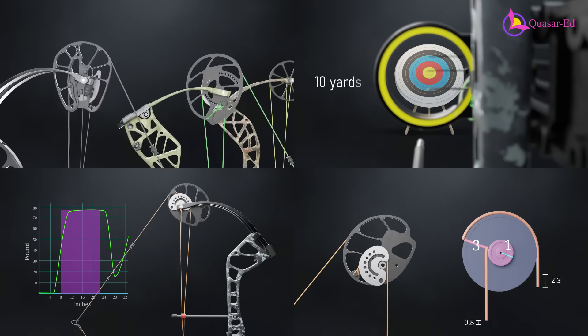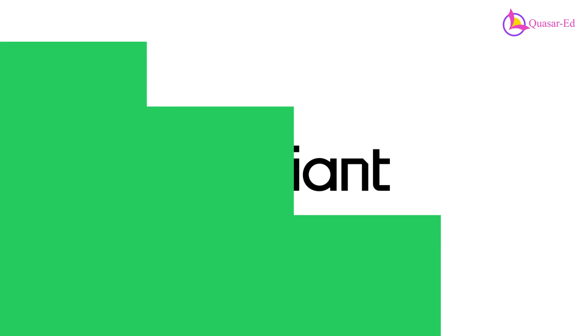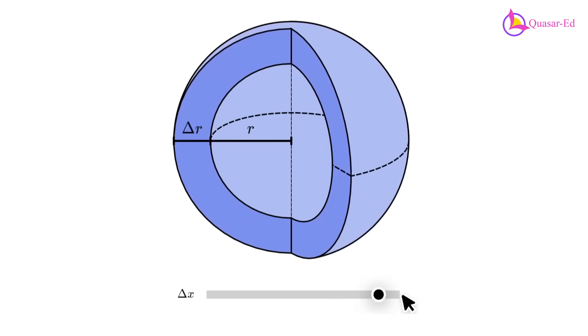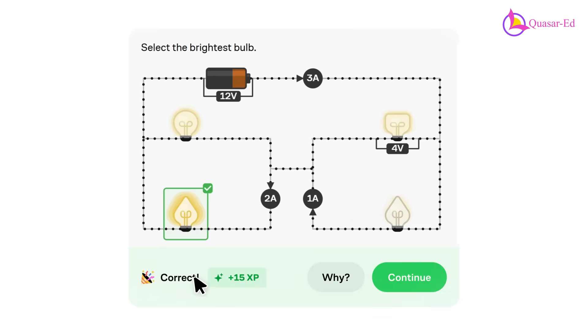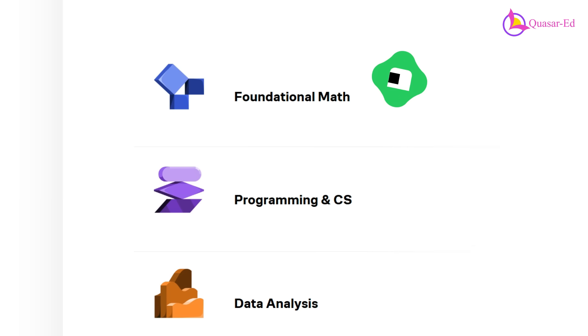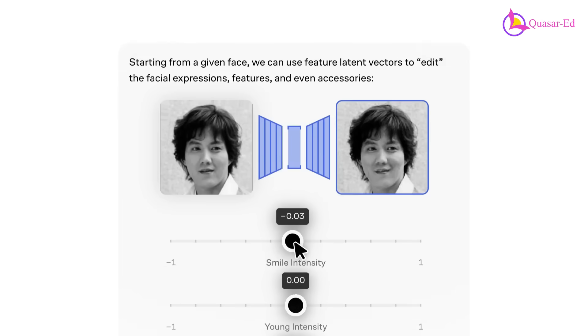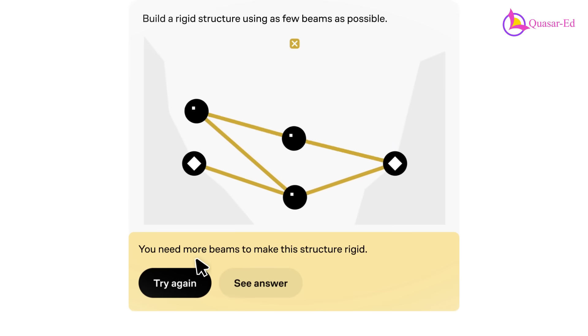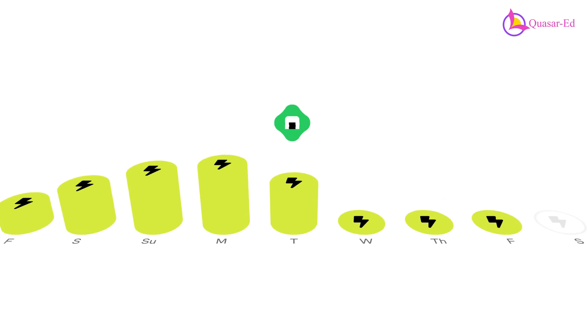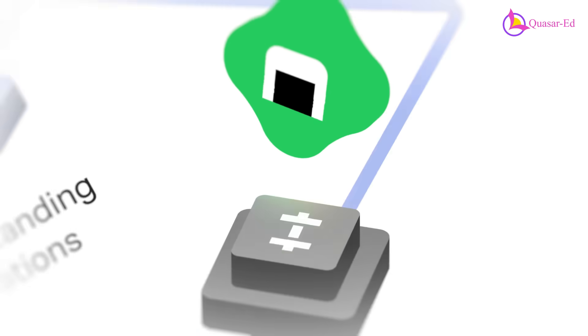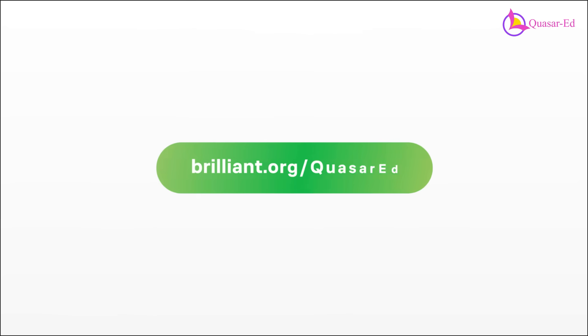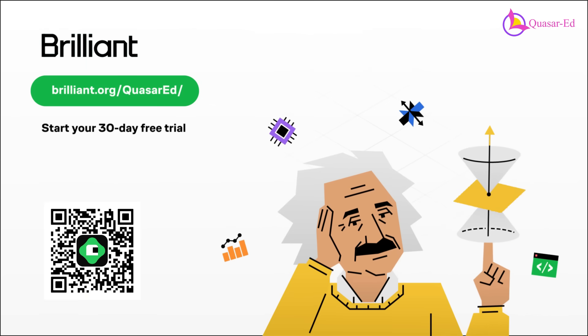And if you enjoy diving into how things like this work, then you'll love today's sponsor, Brilliant. Brilliant is a learning platform that makes tricky topics in math, science, and engineering way easier to understand. Instead of long lectures or heavy textbooks, you get hands-on lessons that are super visual and interactive. They've got courses on everything from simple machines and electricity to black holes and artificial intelligence. To try everything Brilliant has to offer for free for a full 30 days, visit brilliant.org or scan the QR code on screen, or click the link in the description. You'll also get 20% off an annual premium subscription.